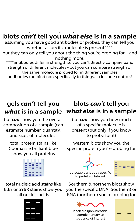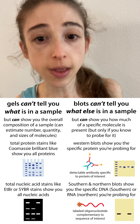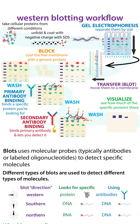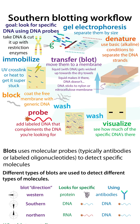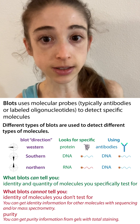A blot, on the other hand, is where you're looking for a specific molecule. We can talk about western blotting, where we're looking for a specific protein using antibodies; southern blotting, where we're looking for specific pieces of DNA using DNA probes; and northern blots, where we're looking for specific RNA pieces using DNA probes.